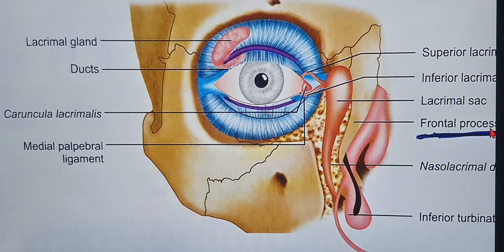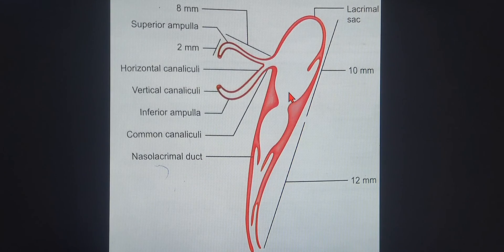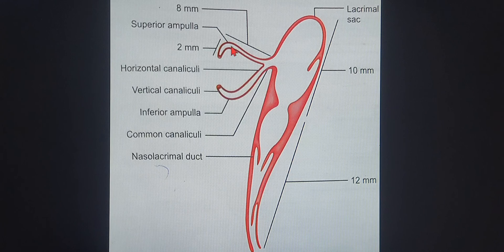Looking at another figure zoomed in, we can see the lacrimal puncti - upper and lower. The canaliculus is divided into two parts: the vertical part, which is around 2 mm in length, and the horizontal part, which is around 8 mm in length. So that's 2 mm plus 8 mm - a total of 10 mm for the canaliculus.